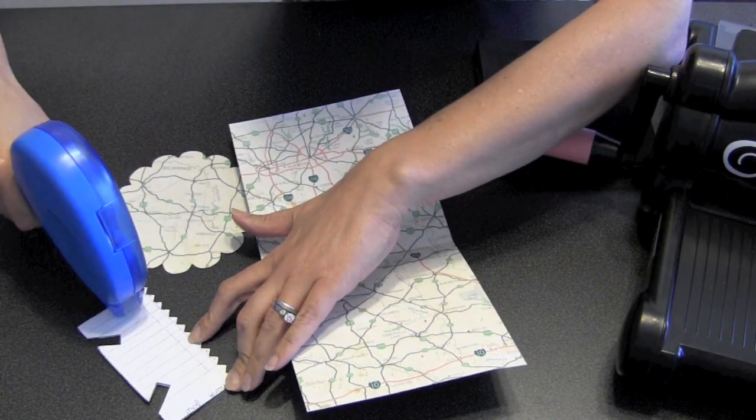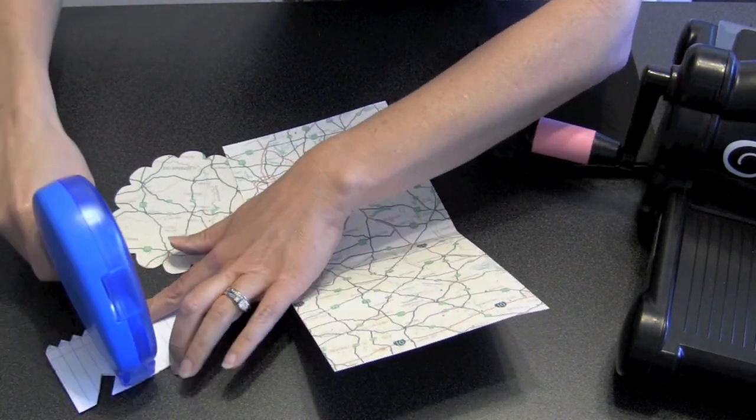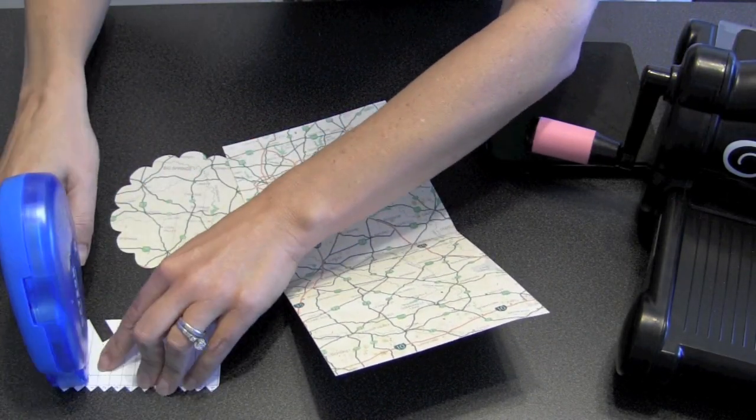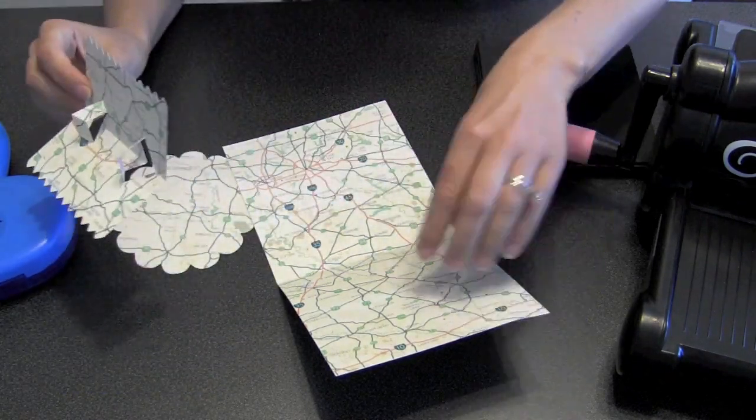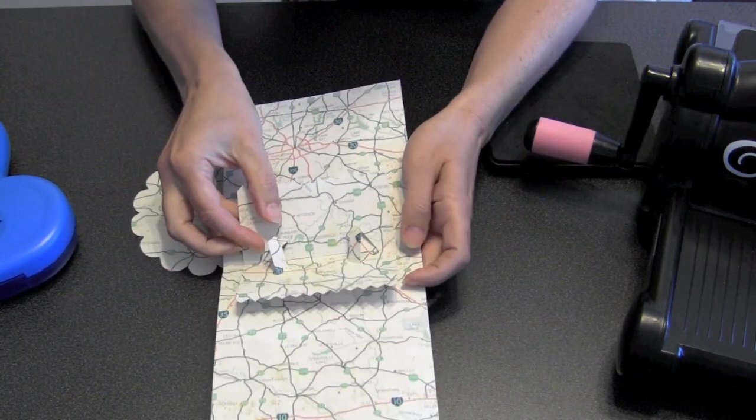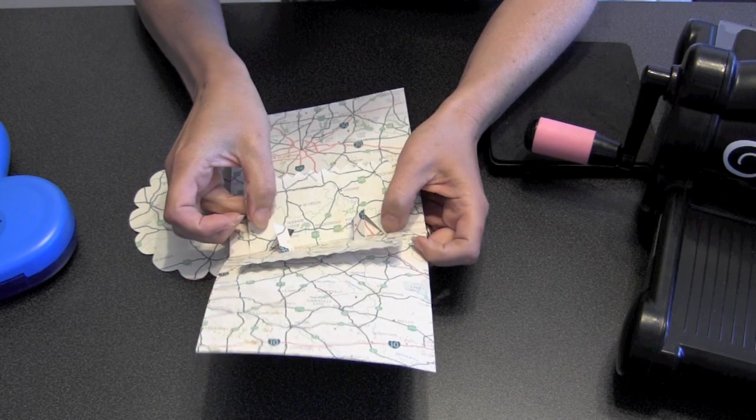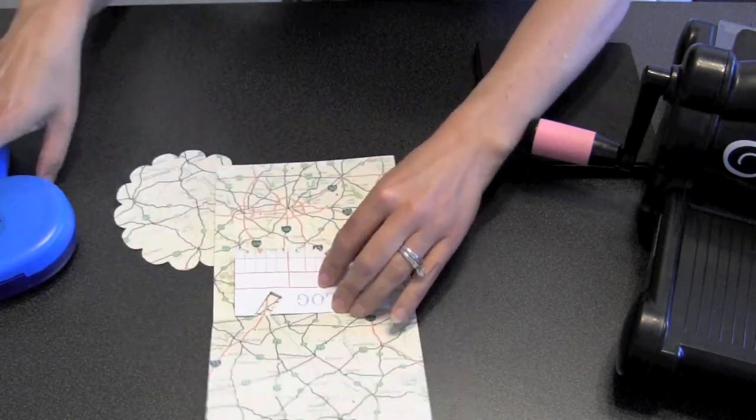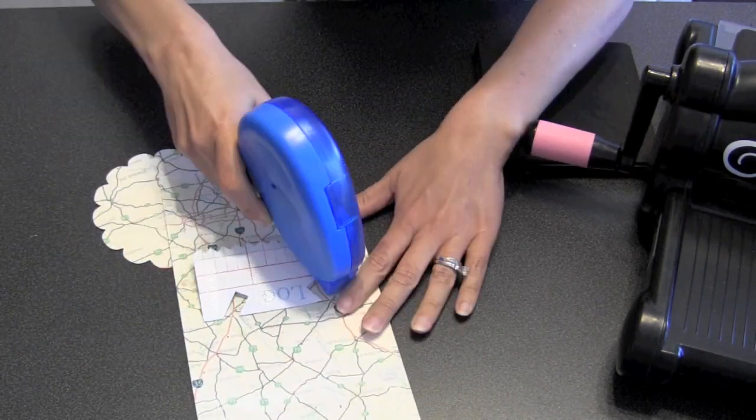The zigzag can be attached with a tape runner. Just coat one side of the pop-up die with tape runner and then get that inside the card, lining up the fold of the zigzag with the fold of the card. Then once you have one half in, repeat for the other side.